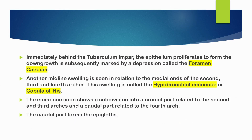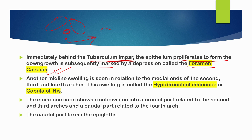Immediately behind the tubercular impar, the epithelium proliferates to form a down-growth, subsequently marked by a depression called the foramen cecum, which I have already shown in the diagram. So we have the two lingual swellings and the tubercular impar, separated by a depression called the foramen cecum.